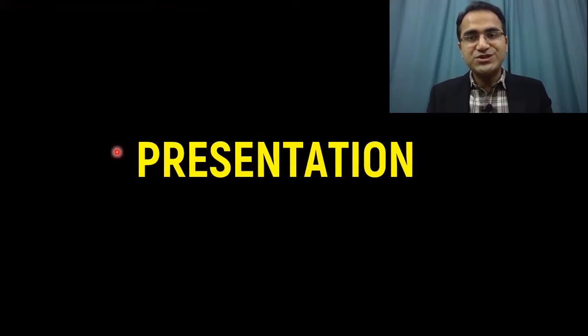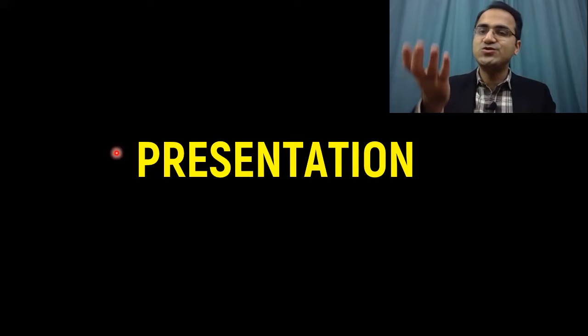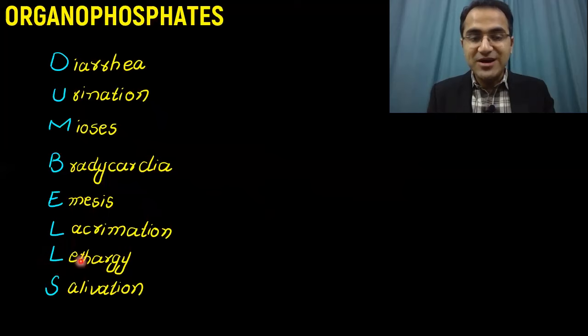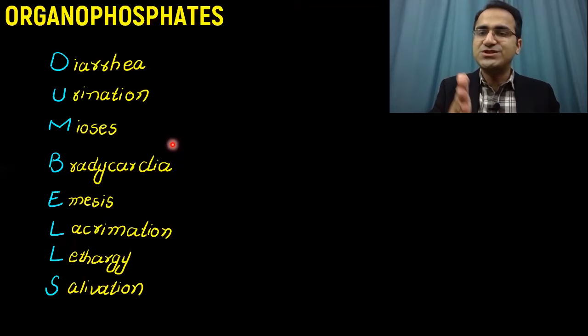Presentation of the patient would be that the patient would be having all the signs and symptoms of increased parasympathetic stimulation. You can easily remember it with the mnemonic DUMBBELS: D for diarrhea, urination, miosis, bradycardia, emesis or vomiting, lacrimation, lethargy, salivation. All the signs and symptoms of parasympathetic overactivity.